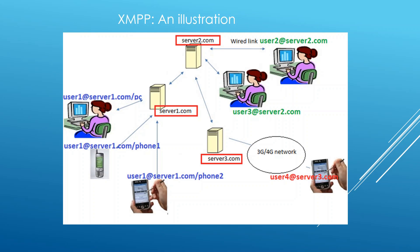We have client devices and server devices. Client devices are things like the PC, the phone. It can be other things too, like internet of things — devices like toasters, even your fridge. Or it can be some bots that are connected to exchange data.